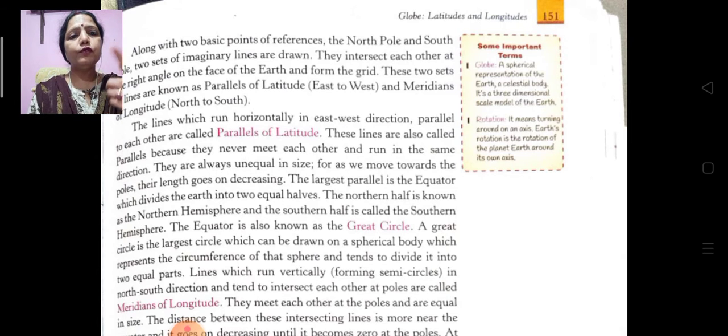As we move towards the poles, they are always unequal in size. The largest parallel is the equator which divides the earth into two equal halves.